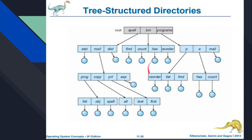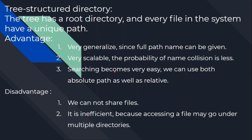Every file has a unique path in the tree structure directories, but here the levels are more. The tree has a root directory and every file in the system has a unique path. The advantage is that it is very generalized — since the full path name can be given, it is very scalable and the probability of name collision is less. The same name can exist in different subdirectories and that is not a problem.